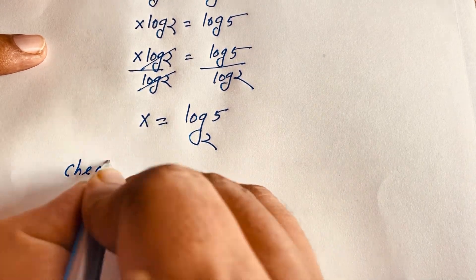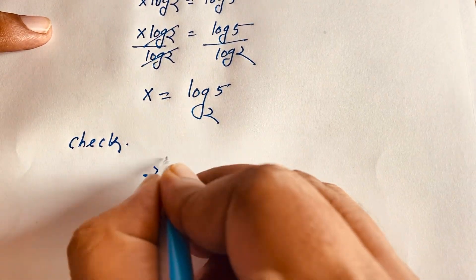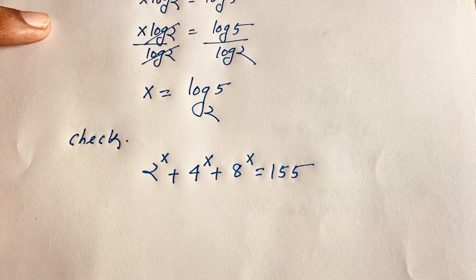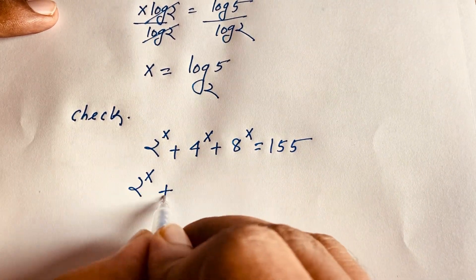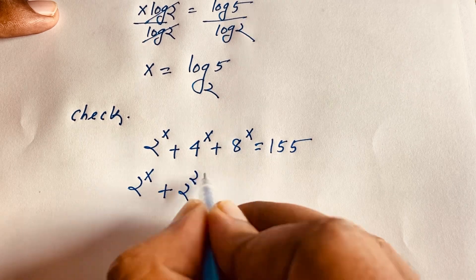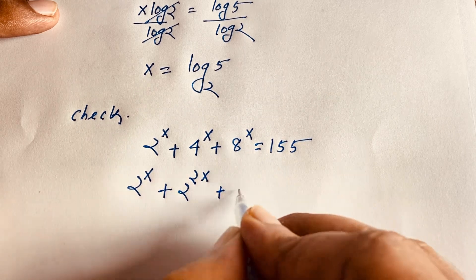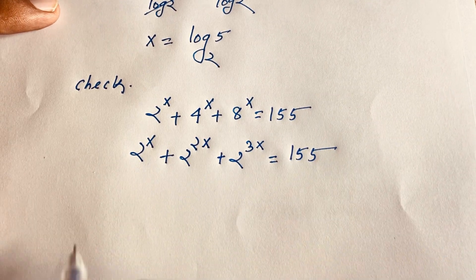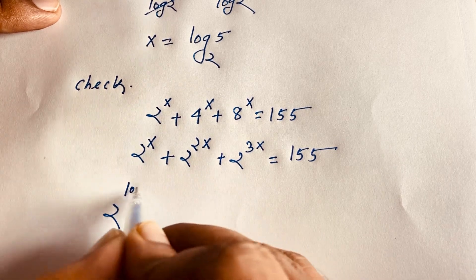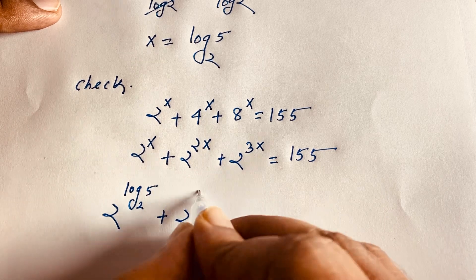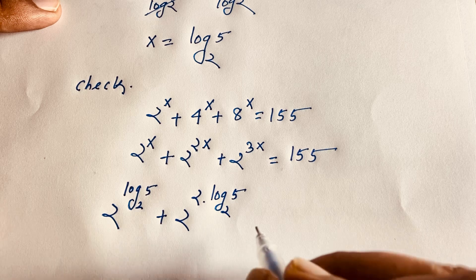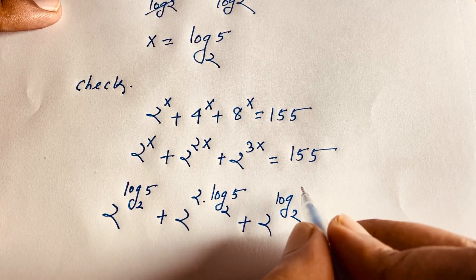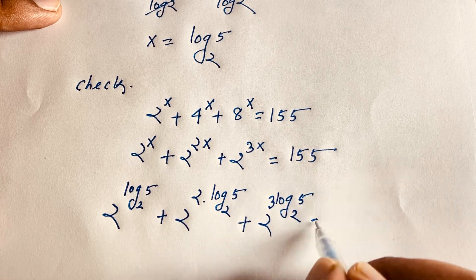Let's verify. The original question: 2 to the power x plus 4 to the power x plus 8 to the power x equals 155. Substituting: 2 to the power x equals 2 to the power (log base 2 of 5), plus 2 to the power (2 times log base 2 of 5), plus 2 to the power (3 times log base 2 of 5), equals 155.